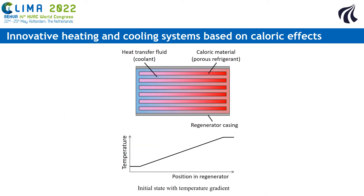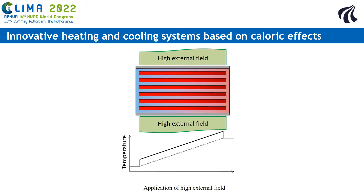The different steps of a typical caloric heat pump cycle are as follows. At first, there is a temperature gradient within the regenerator. Then a high external field is applied to the caloric material. Depending on the caloric material, it has to be a magnetic field, an electrical field, pressure, or stretching. The application of that external field increases the temperature throughout the entire regenerator.